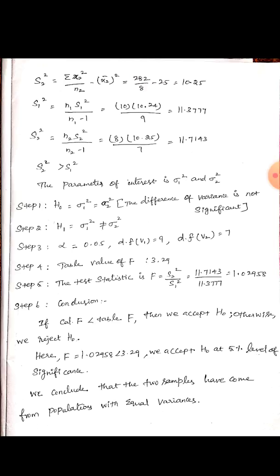Comparing capital S1 square and capital S2 square to find which is the highest variance: S2 square equals 11.71 is the highest, and S1 square equals 11.3 is lower. So S2 square is taken as the first — the highest variance. The parameter of interest is sigma 1 square and sigma 2 square as sample variances.